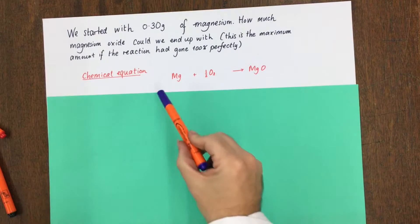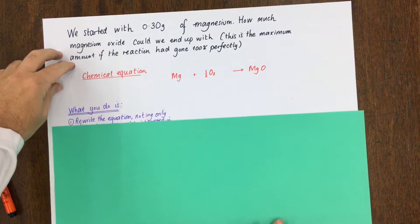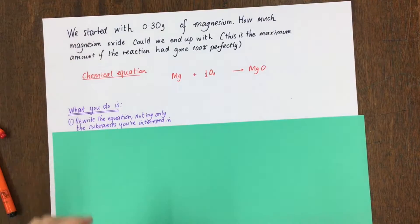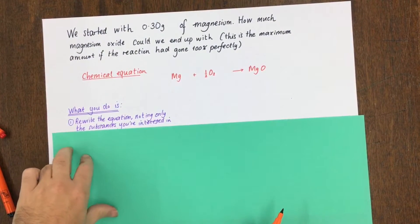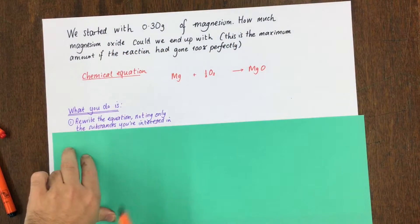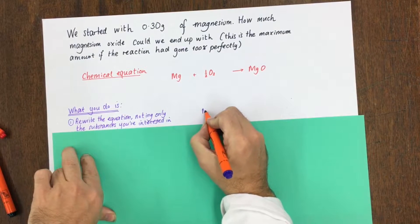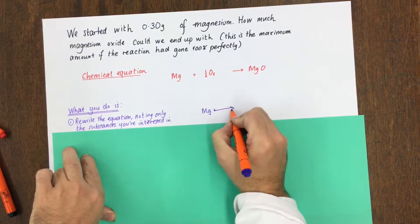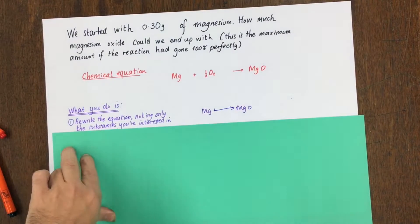We're given the chemical equation of magnesium plus oxygen goes to magnesium oxide. Step one: rewrite the equation, noting only the substances you're interested in. So we're interested in magnesium and magnesium oxide. We're going to rewrite this equation to say magnesium goes to magnesium oxide, because we're not interested in the oxygen.